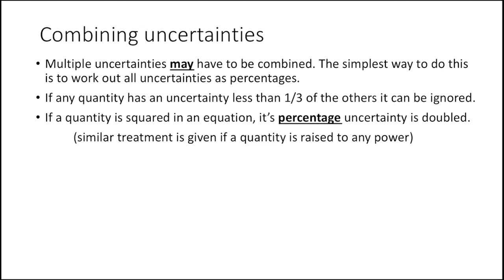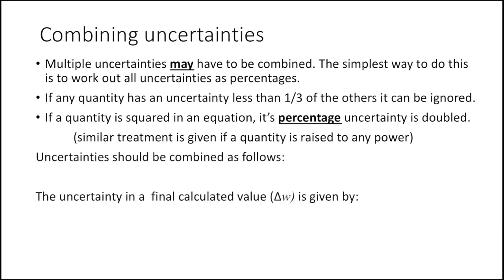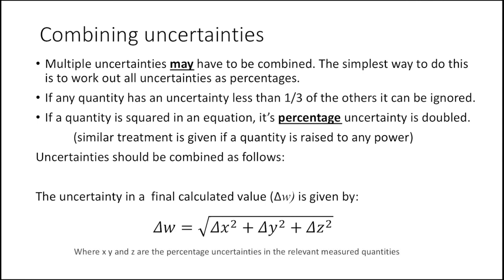The big difference between Higher and Advanced Higher Physics is how we combine uncertainties. The uncertainty in a final calculated value is given by the Pythagorean method: you take the percentage uncertainties in your individual measurements, square them, add them together, and then square root the result. We're probably better showing this with an example.